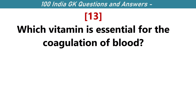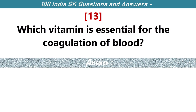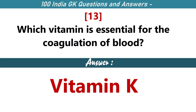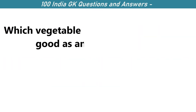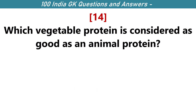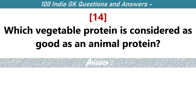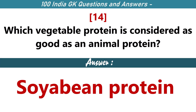Which vitamin is essential for the coagulation of blood? Vitamin K. Which vegetable protein is considered as good as an animal protein? Soybean protein.